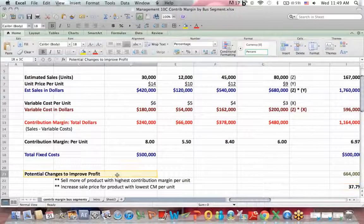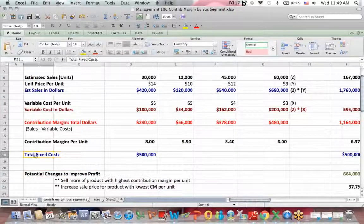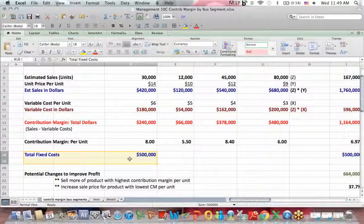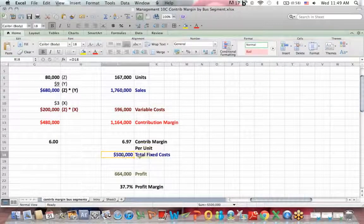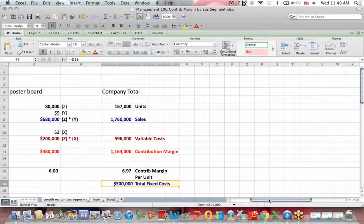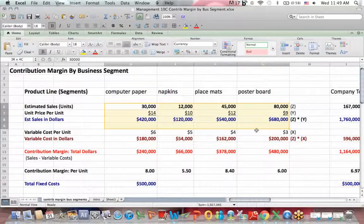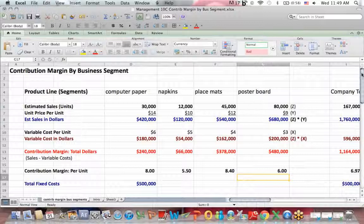Last thing I want to talk about is potential changes to improve profit. How can I be more profitable? Well, fixed cost is what it is. You're going to subtract that from your profit to come up with company-wide profit. That's why fixed costs are only in the total company column. So the question is, what can I do between sales and variable costs to become more profitable?